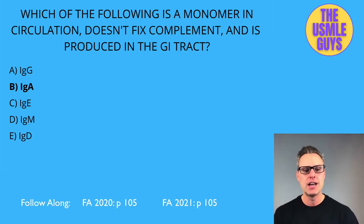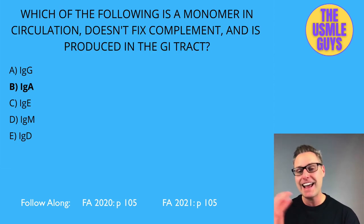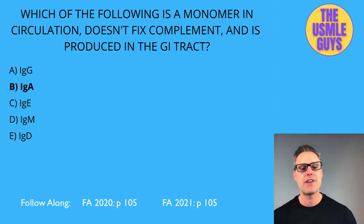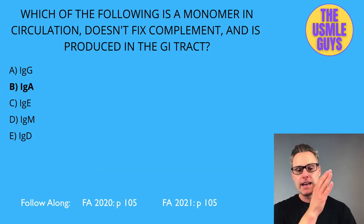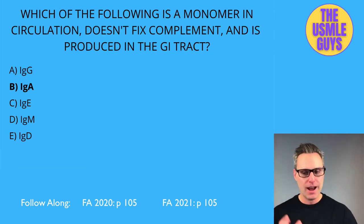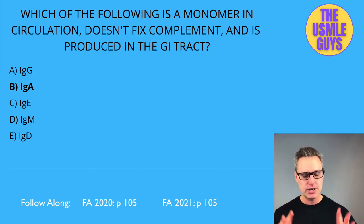IgG is the main antibody responsible for the secondary response to an antigen. It is also the most abundant isotype in the serum — circle that. IgG is the only immunoglobulin that crosses the placenta, providing infants with passive immunity, though this begins to wear off after birth. IgG also fixes complement, opsonizes bacteria, and neutralizes bacterial toxins and viruses.